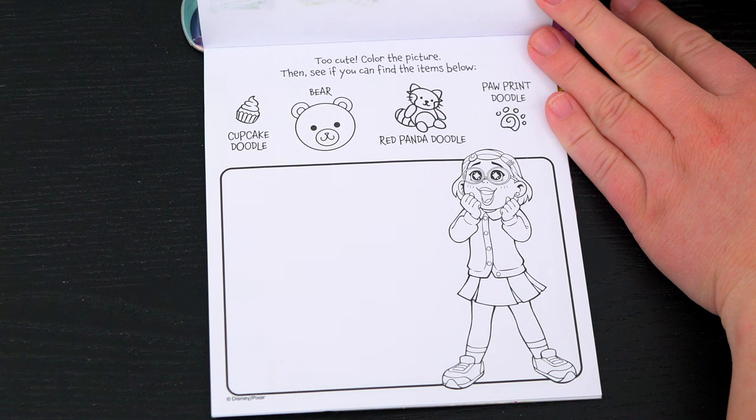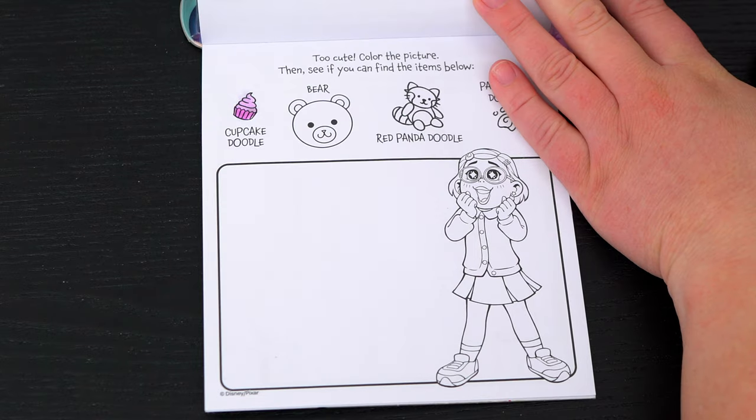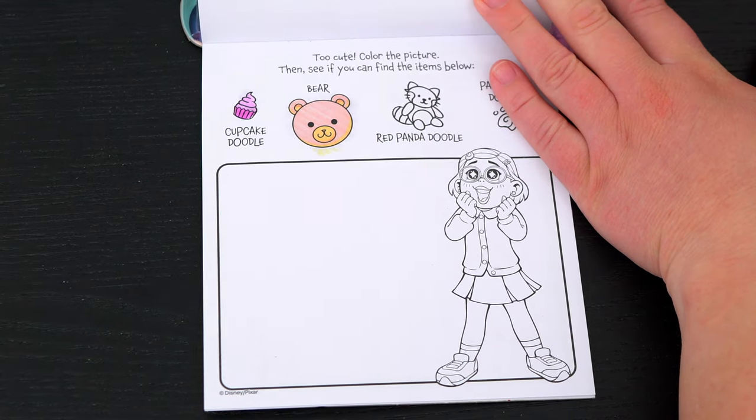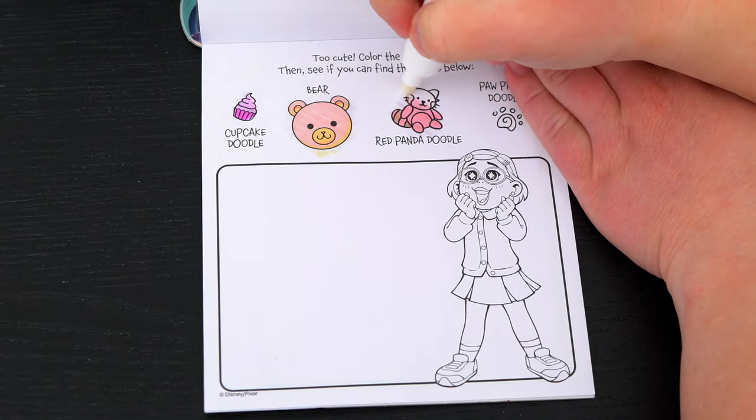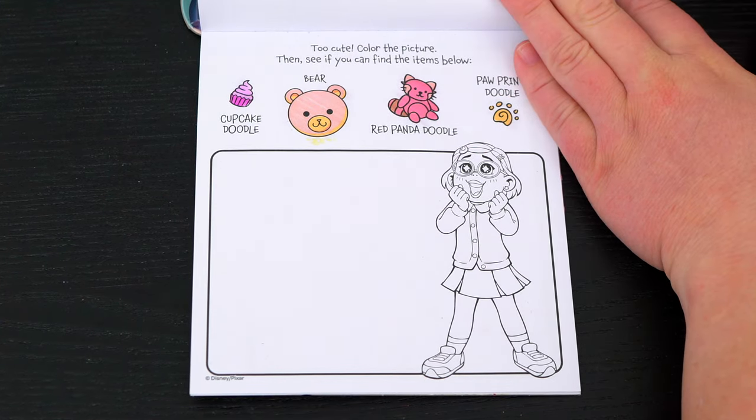Color the picture, then see if you can find the items below! Okay, so we need to find a cupcake doodle, a bear, a red panda doodle, and a paw print doodle! All right, let's color in this picture and see if we can find those items!